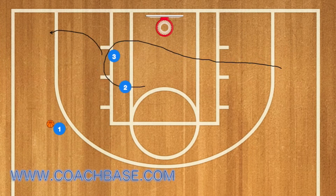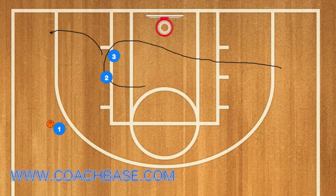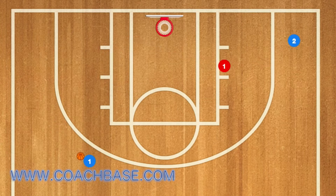Next is a curl cut and a flare cut. For the curl cut, you start on one side of the key on the block, then you use the post player on the opposing block as a screen and you curl around him.